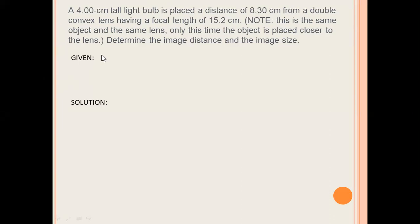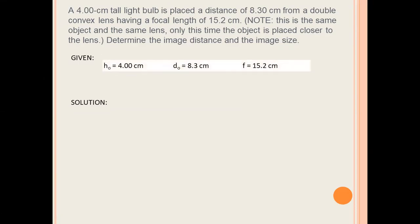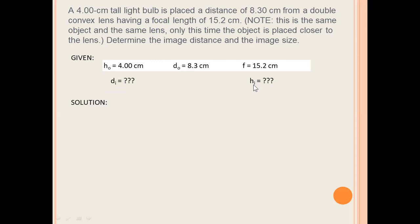We are going to determine the image distance and the image size. We are given the following variables: the height of the object (HO) is equal to 4 cm, the object distance (DO) is 8.3 cm before the convex lens, and the focal length of the convex lens is 15.2 cm. We are required to determine first the image distance, and second the height of the image or image size as HI.